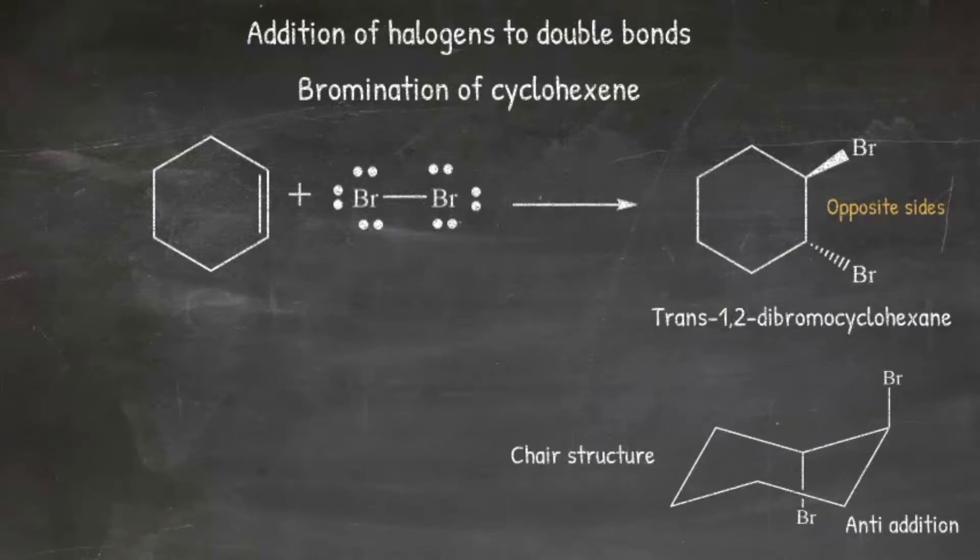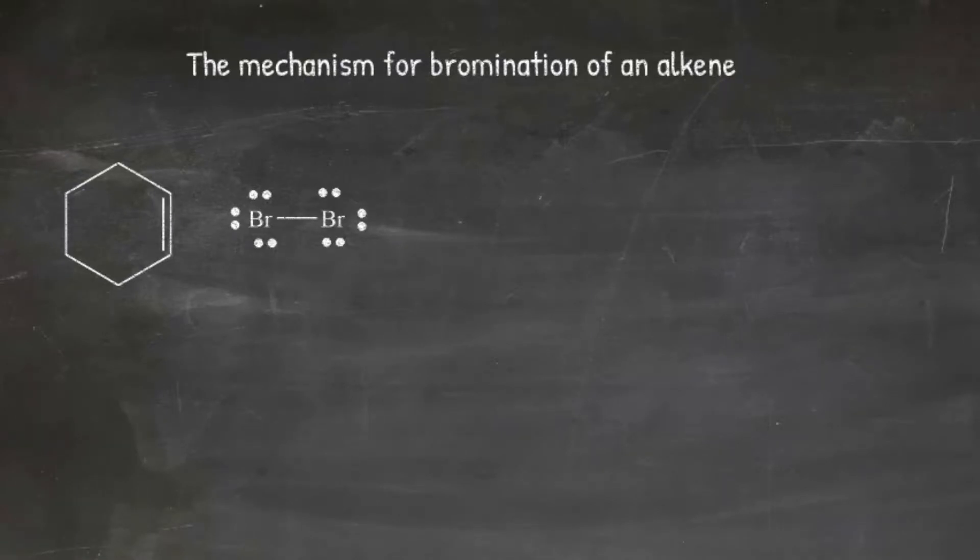The next slide shows the mechanism. In the mechanism for the bromination of cyclohexene, the cyclohexene is the nucleophile and the bromine is the electrophile.